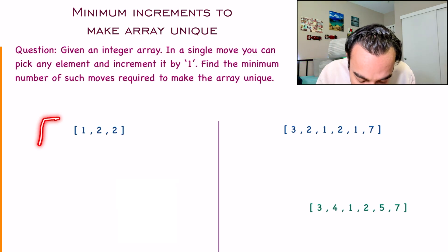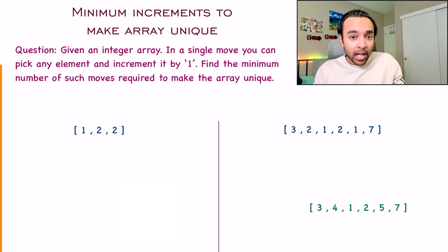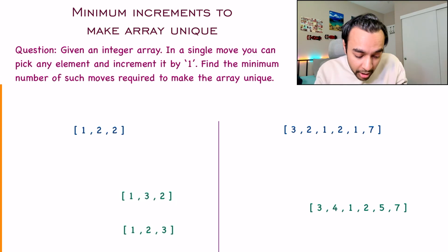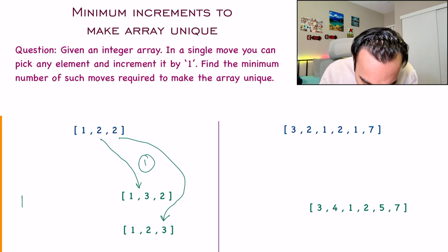For example, when I have this test case, I see the elements 1, 2, and 2. You can see that 2 is repeated. So you need to increment one of these elements such that the array becomes unique. Either you can increment this 2 to become a 3, or this 2 to become a 3. In any case, you needed 1 move, so 1 is the answer for the first test case.